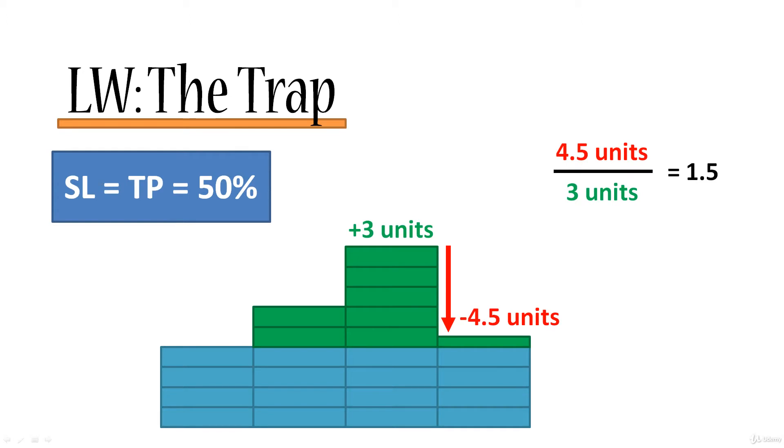As you remember, in the Larry Williams method, we had the trap. It's a concept that we labeled the trap. It's not an actual trap, but it feels like a trap when you actually stumble upon it. Even if we had the stop loss equal to the take profit at 50%, the actual effective ratio of the stop loss to take profit was always 1.5.